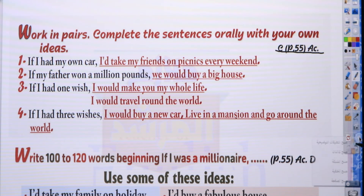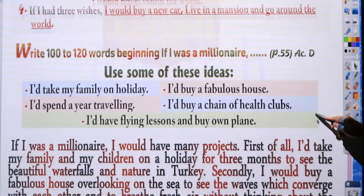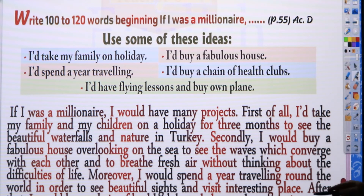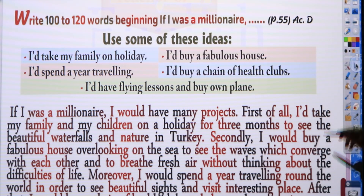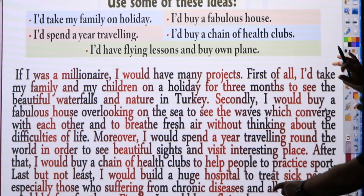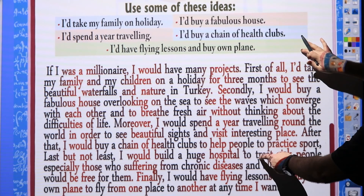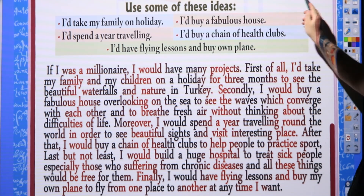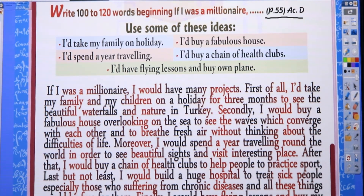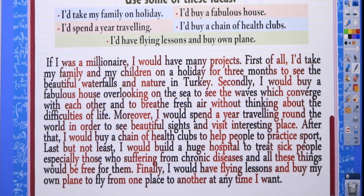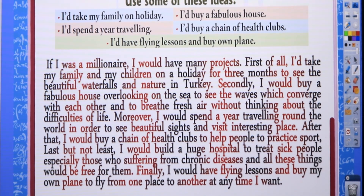This completes the second conditional exercises. There is also a writing exercise — Exercise D, page 55 of the activity book — 'If I was a millionaire', using given phrases. This is for practice only, not memorization — it trains you to write a composition using second conditional structures.